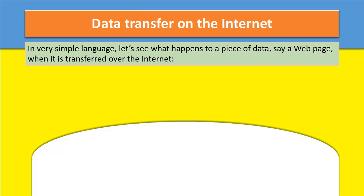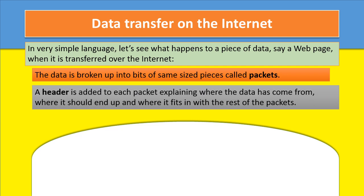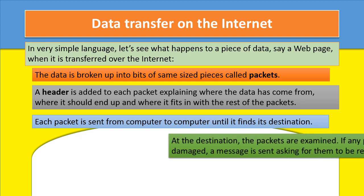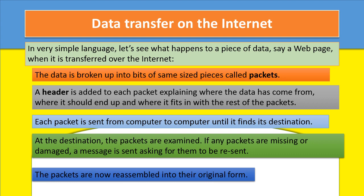Data transfer on the internet: The data is broken up into same-sized pieces called packets. A header is added to each packet explaining where the data has come from, where it should end up, and where it fits in with the rest of the packets. Each packet is sent from computer to computer until it finds its destination. At the destination, the packets are examined. If any packets are missing or damaged, a message is sent asking for them to be resent. The packets are then reassembled into their original form.